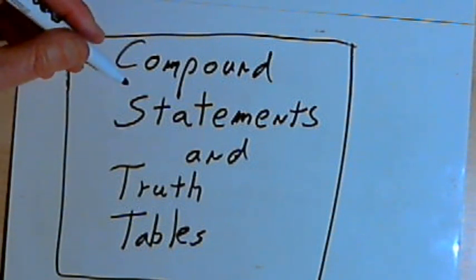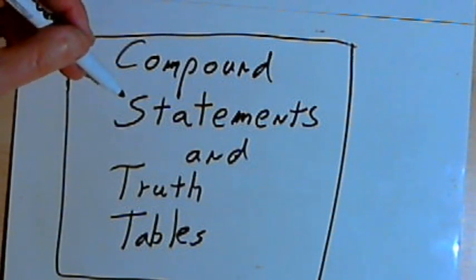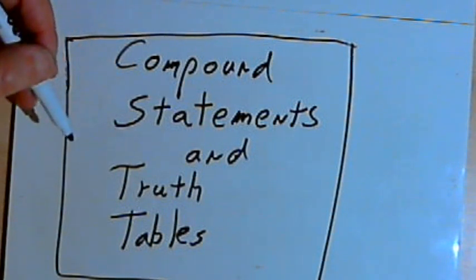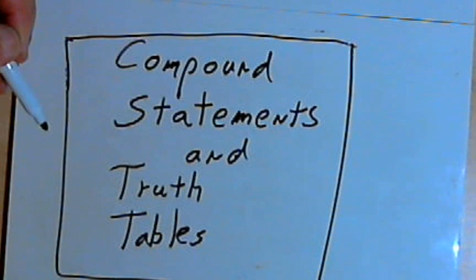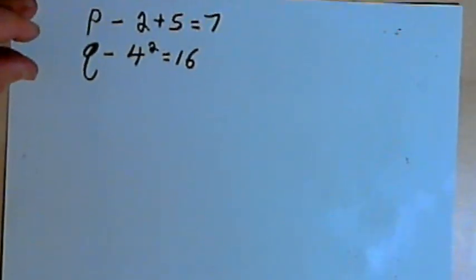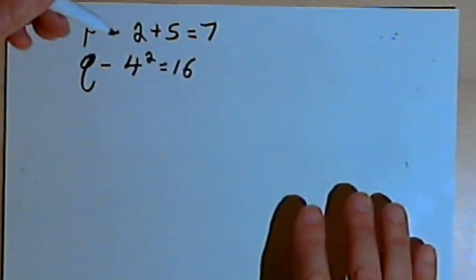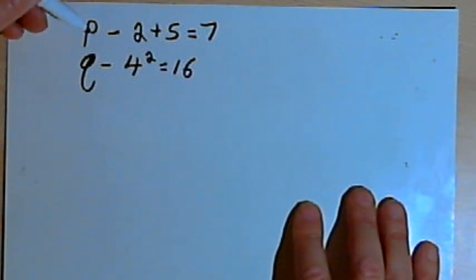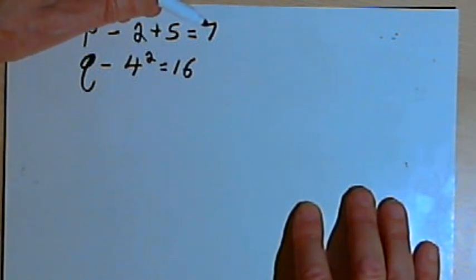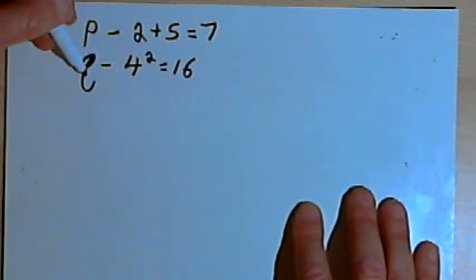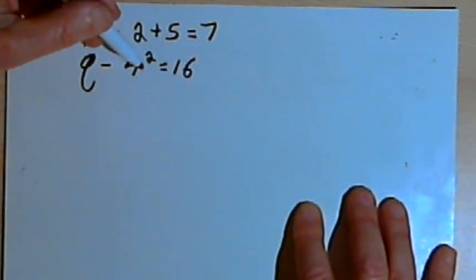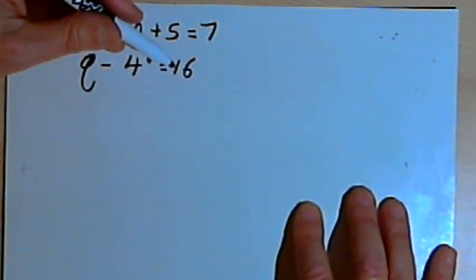This video is going to be about compound statements and truth tables. Let's say I've got two statements. Statement P is 2 plus 5 equals 7, and statement Q is 4 squared equals 16.